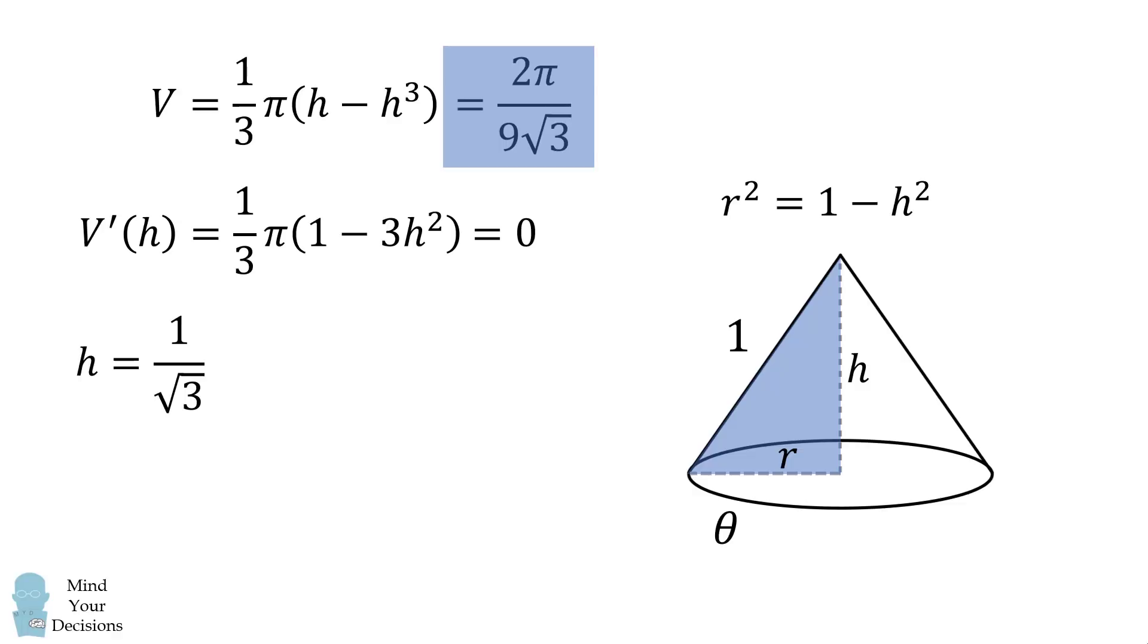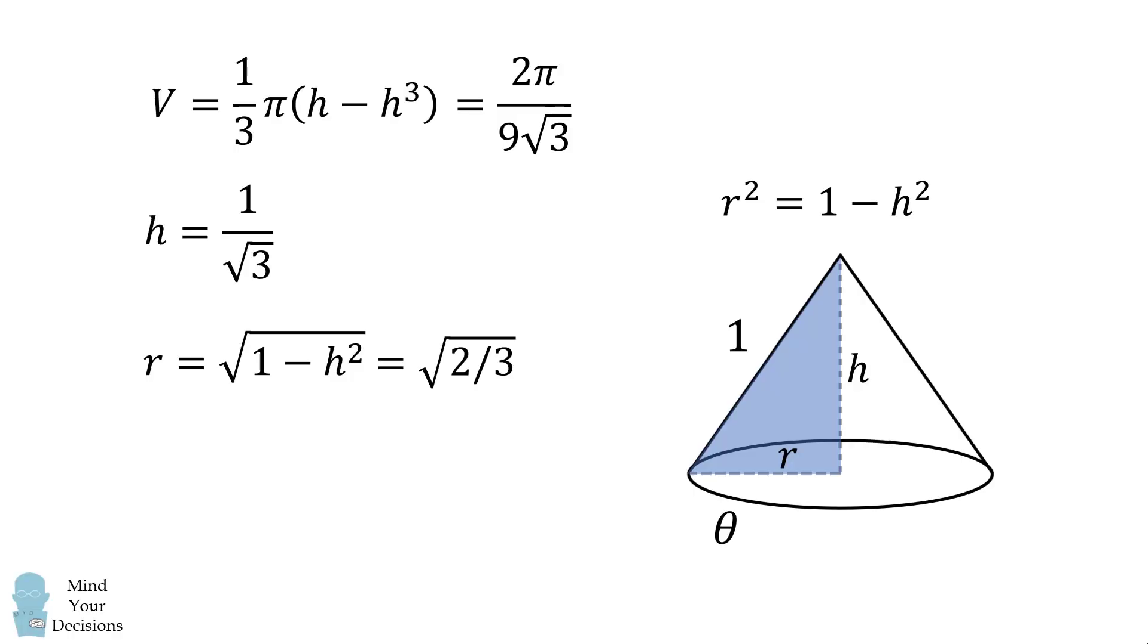From here, we need to calculate the central angle theta, which gives us maximum volume. To do that, we'll solve for the radius. Using this formula, we'll solve for r, and then we'll substitute in for h. We get that r is equal to the square root of 2 over 3. Then, we consider the circumference of the base of the cone. The circumference is equal to theta, and it's also equal to 2 pi r. We substitute in for r, and we thus have the value of theta in radians. We multiply this equation by 180 over pi to get the answer in degrees, and that's approximately equal to 293.9 degrees.